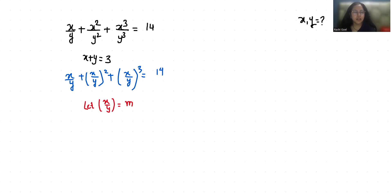So m plus m square plus m cube equals 14. Therefore, m cube plus m square plus m minus 14 equals 0.